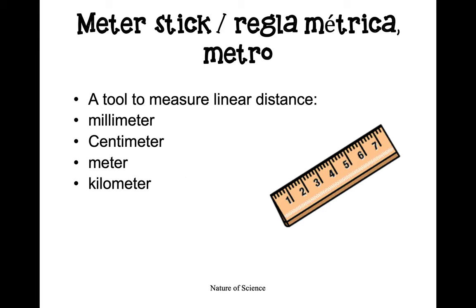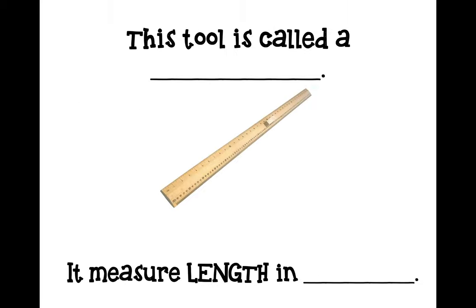If you wish to measure a larger object, you might use something called a meter stick. A meter stick is a much larger version of a ruler — it is a tool used to measure linear distance and is usually used when you measure meters and kilometers. Based on the image, take the next 10 seconds to tell me what this tool is called and what it measures in length.